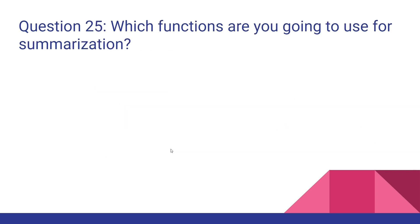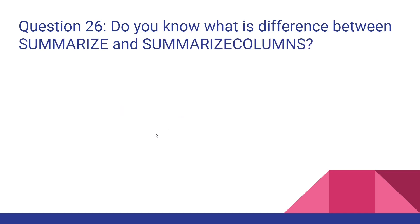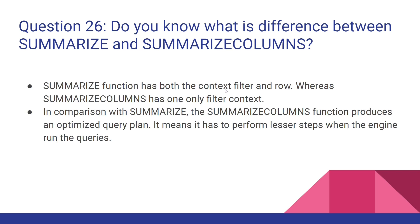Next question: which functions are you going to use for summarization? There are mainly three functions: SUMMARIZE, SUMMARIZECOLUMNS, and GROUPBY. The difference between SUMMARIZE and SUMMARIZECOLUMNS is that SUMMARIZE has both filter and row contexts, whereas SUMMARIZECOLUMNS has only filter context. In comparison with SUMMARIZE, the SUMMARIZECOLUMNS function produces an optimized query plan, meaning it performs fewer steps when the engine runs the queries. Based on the situation, choose which function to use in your project.